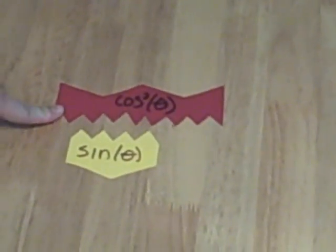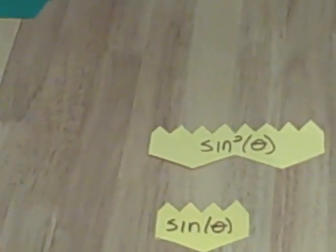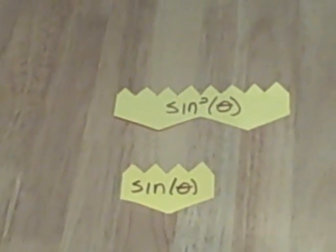Cosine squared. Oh, that's 1 minus sine squared. So, we will bring this back up. And we need a 1. And we need a subtraction sign.